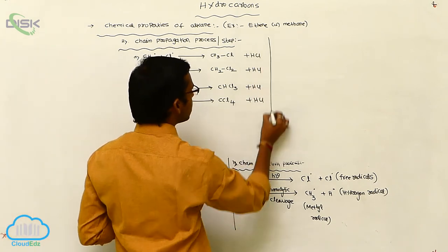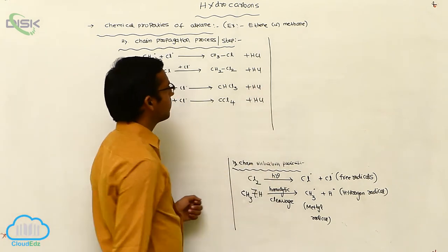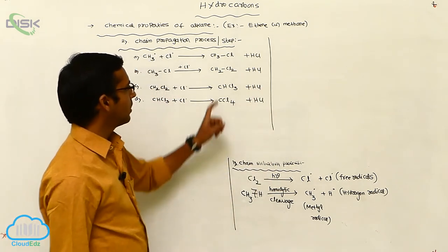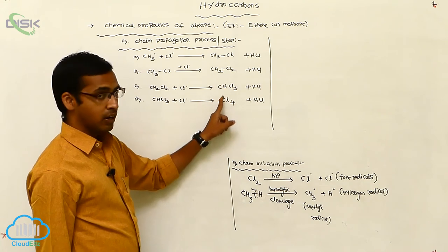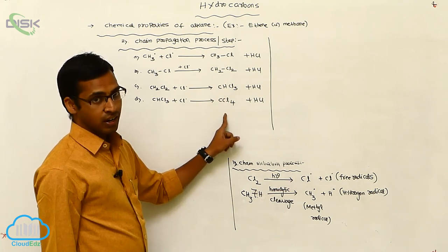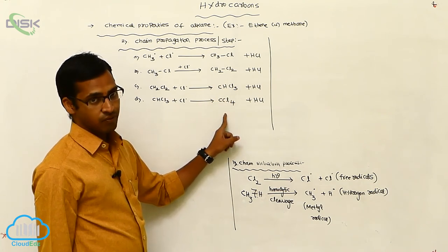Propagation means monochloromethane, dichloromethane, trichloromethane, and tetrachloromethane are formed.